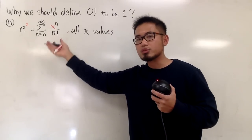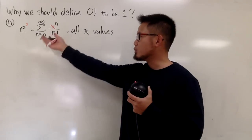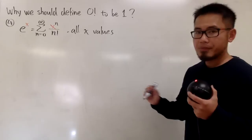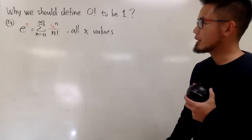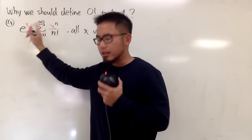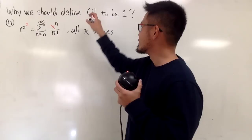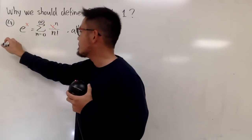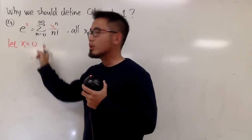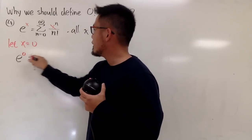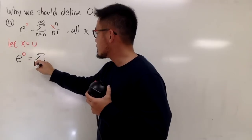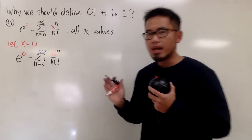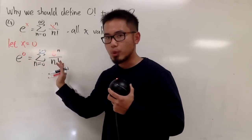For example, you can plug in x equals negative 100 and it still holds. Since we're talking about 0 factorial, I'll let x equal 0. Because this is true for all x, I can use x equals 0. Plugging 0 into the left-hand side gives e to the 0, and the right-hand side becomes the sum from 0 to infinity of 0 to the n over n factorial.